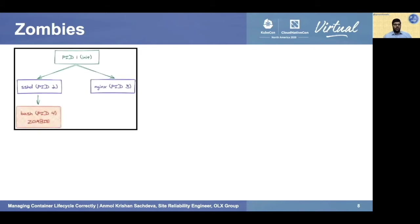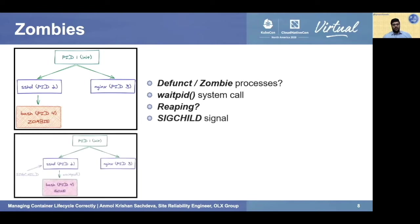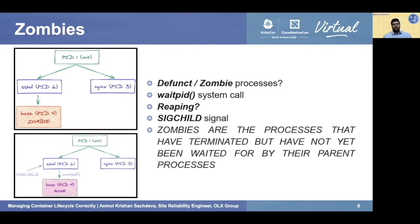Let's have a look at zombies. A zombie process is one that has terminated but has not been waited for by its parent. 'Waited for' means the parent waits for the child to return its exit code so that it can release the resources it holds — a process called reaping. The parent triggers the waitpid system call after receiving a SIGCHLD signal from the terminating child process. Once the waitpid system call is triggered, reaping starts. In short, zombies are processes that have terminated but have not yet been waited for by their parent processes.